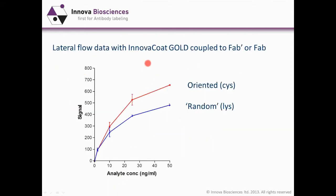This is data with the ANOVA coat gold with the protective surface, coupled either to FAB prime with the thiol or with the blocked thiol, which is effectively FAB. You can see signal versus analyte concentration in the lateral flow test. We get a greater signal with the oriented fragment as opposed to the fragment that's randomly oriented.